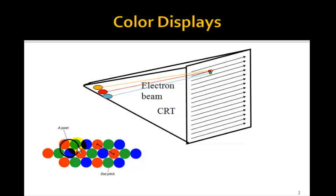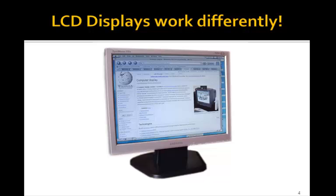So your eye will integrate the red, green, and the blue. So if you have just red and green, then you'll see yellow. Now LCD displays work differently, but the interface is the same, the VGA interface. That is, it's based on a raster scan in the same way.